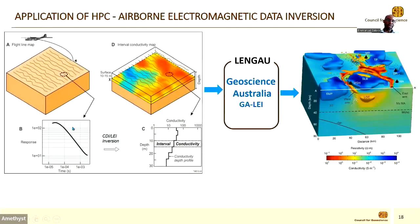Still on airborne inversion: we collect data in lines and generate 1D inversion, where at each single point there is a response. We convert that response into a conductivity response and develop a 3D volume of the earth using the GALEI inversion algorithms. We generate a 3D volume of the earth, and with this information we are able to locate minerals of economic importance.